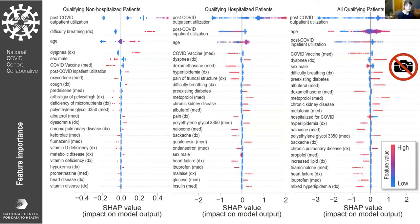We interestingly found that receiving a COVID vaccine post-acute COVID — not vaccination in general, but patients who had COVID and then got vaccinated — appear, at least in this model, to be less likely to end up in the long COVID clinic.